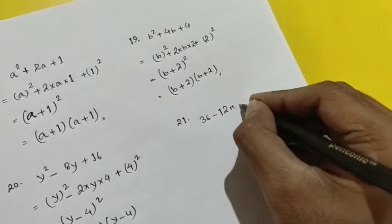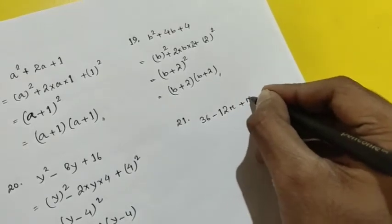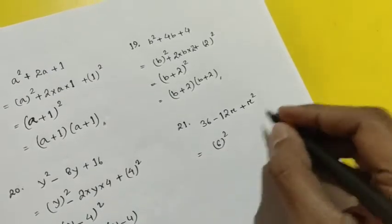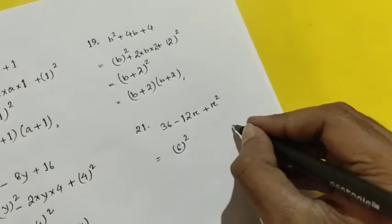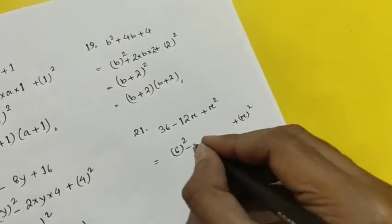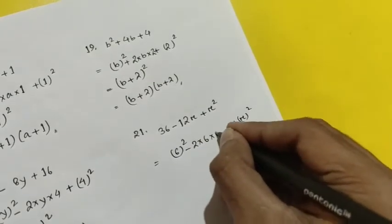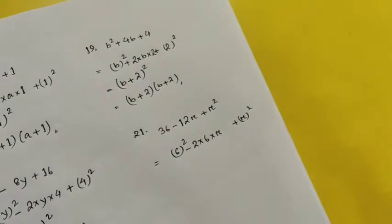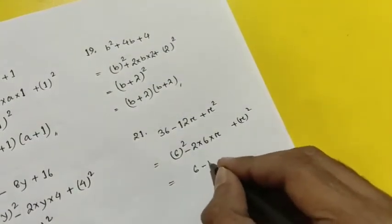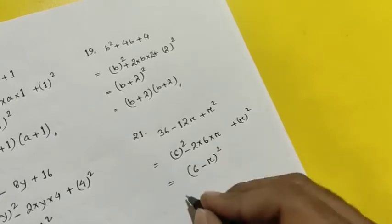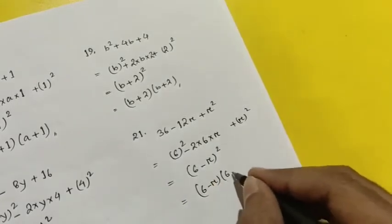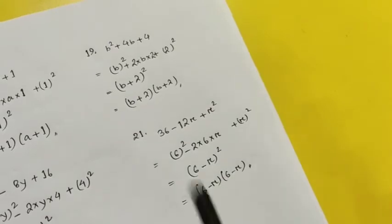Let's see question number 21: 36 - 12r + r². Now 36 is the square of 6, and r² is the square of r, and the middle term is minus 2 into 6 into r. So using a² - 2ab + b² = (a-b)², this gives (6-r)², which in factorized form is (6-r)(6-r). I hope it is clear to you all.